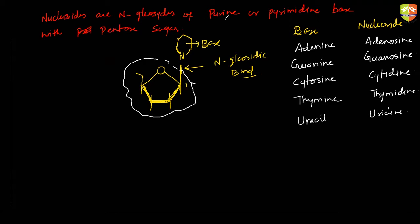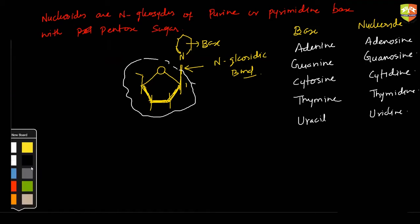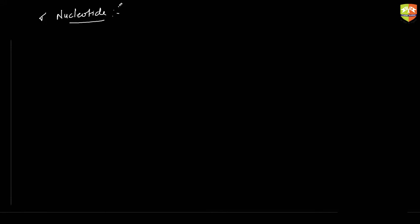The combination of a purine or pyrimidine base with a pentose sugar, where the base and sugar are connected with an N-glycosidic linkage — that is a nucleoside. Similarly, we can define nucleotides. A nucleotide is a phosphate ester of nucleosides, which contains a purine or pyrimidine base.